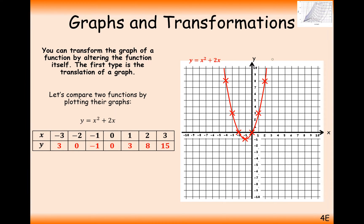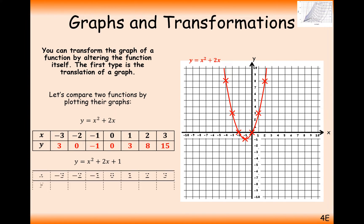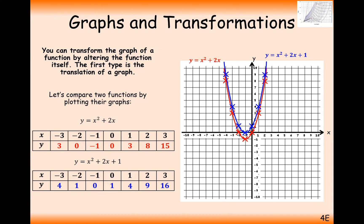We get this rough shape of graph. Now, what we're going to consider next is what we get if we draw the graph of y equals x squared plus 2x plus 1. You can see the only difference from this graph to this one is we've added on 1 to our equation. As we plot these coordinates, each of the y coordinates in the blue is one bigger than in the red. So what we've done to this red graph is we've translated it up by 1.